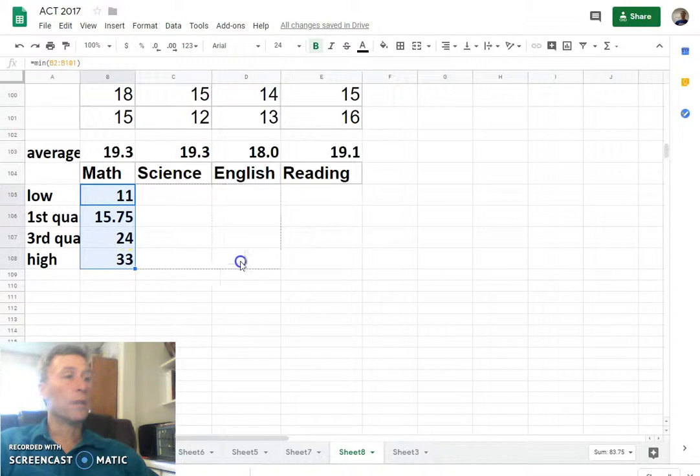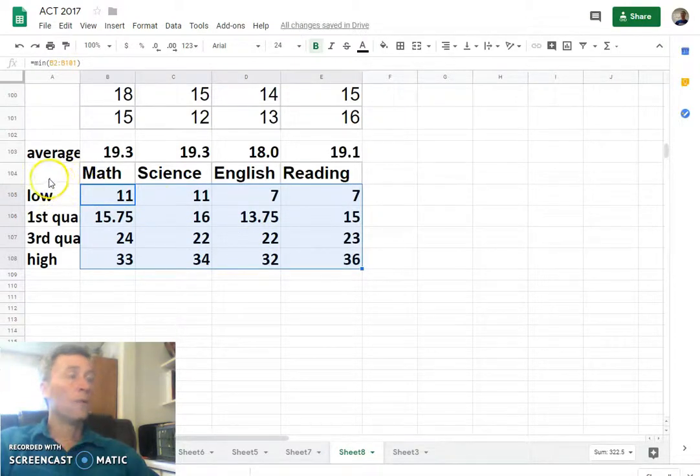And let's do that for science, English, and reading. Well, the box plot in Google Sheets is done with a candlestick chart.